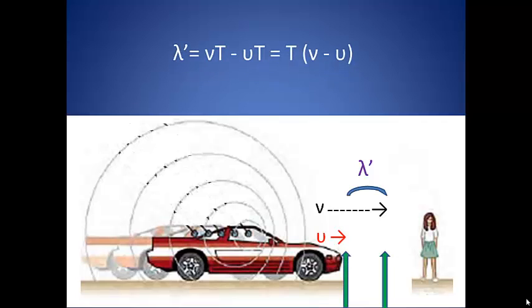Now if we want to know the difference in the wavelength, we need to only know the velocity of each wave and the period of the wave. So lambda prime is equal to vT minus uT, or the velocity of the wave minus the velocity of the source times the period of the wave.